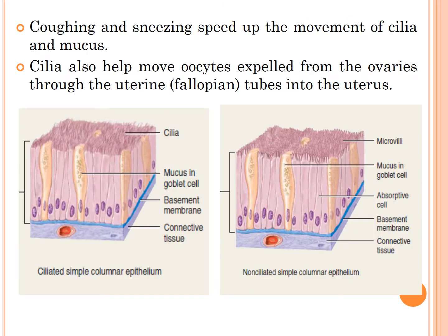Coughing and sneezing speed up the movement of cilia and mucus. Cilia also help move oocytes expelled from the ovary through the fallopian tube into the uterus. In figures, the ciliated simple columnar epithelial cells show cilia at the apical surface, while non-ciliated simple columnar epithelium has microvilli instead. Both have column-shaped cells arranged in a single layer.